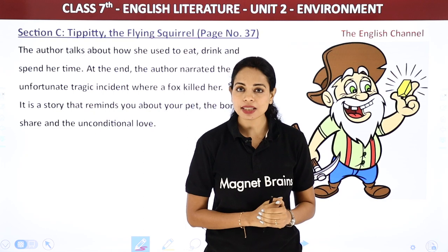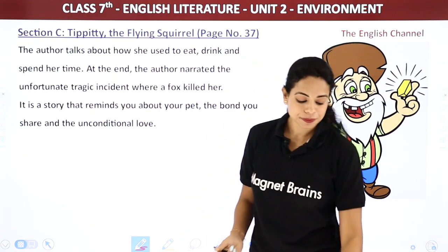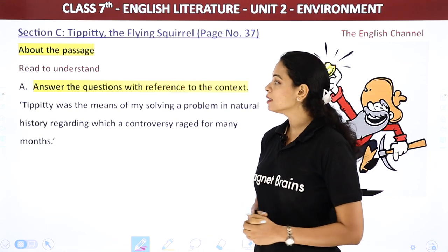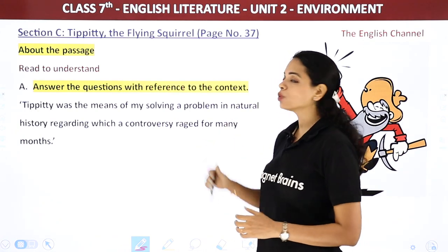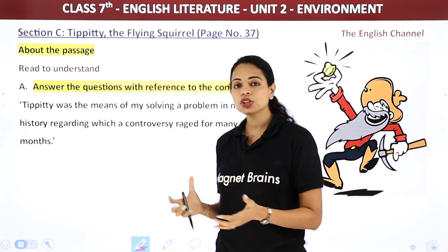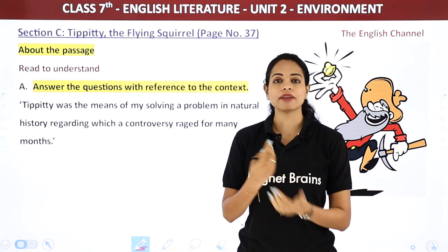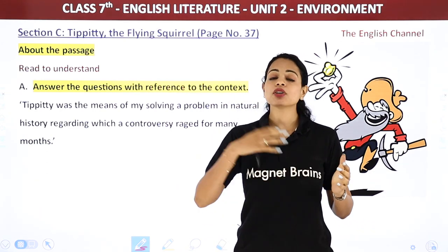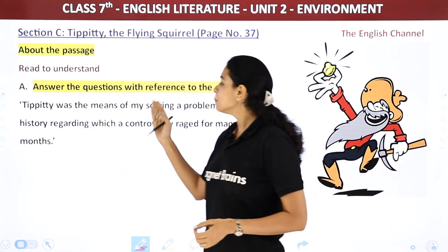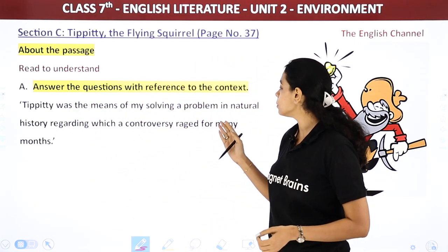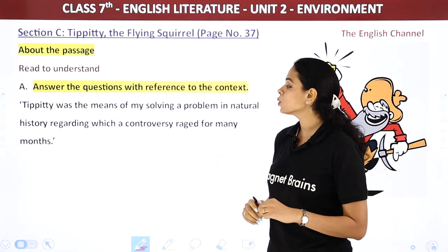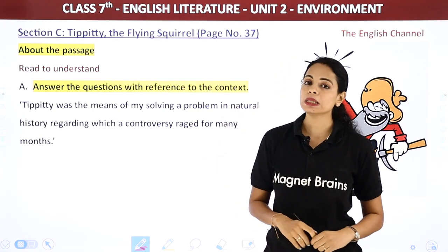Now we will start with the question answers which are behind the chapter. The first question is 'Read to Understand: Answer the questions with reference to the context.' You have been given some lines, and on the basis of your understanding of the chapter, you have to answer them. The passage reads: 'Tippity was the means of my solving a problem in natural history regarding which a controversy raged for many months.'